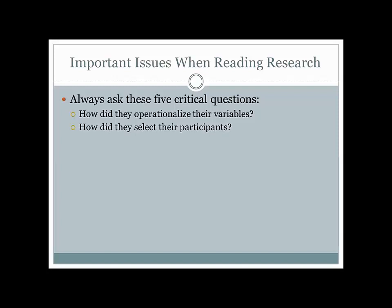The second question is: how did they select their participants? Did they do random selection? Did they ask for volunteers? Did they just take people they found on the street? Unless the process was a random process, they can't generalize their findings back to the population. You can only generalize to the population if you randomly sample.